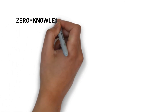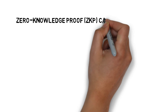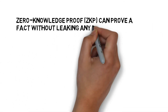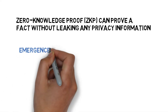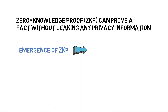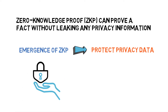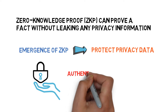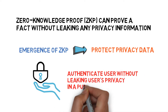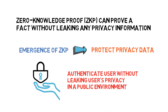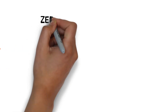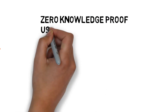Zero knowledge proof, abbreviated as ZKP, is a novel way to prove a fact without leaking any privacy information. The emergence of zero knowledge proof is one of the most important things for the protection of privacy data. Nowadays, ZKP is widely used in many blockchain projects, which can effectively provide a way to authenticate the user without leaking users' privacy in a public environment.